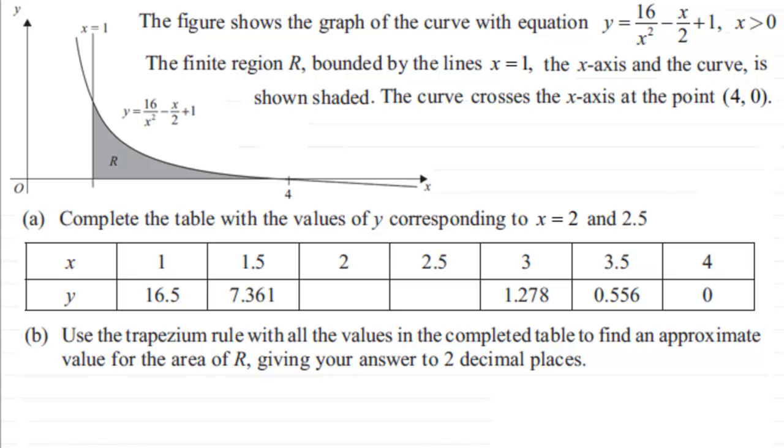Okay well first of all, nice easy one here, just got to fill in our y value when x is 2. So you just need to substitute it in here. So you've got 16 over 2 squared minus 2 over 2 plus 1. And if you work that out it comes to simply 4. Substitute 2.5 into here and you'll find that you get 2.31.